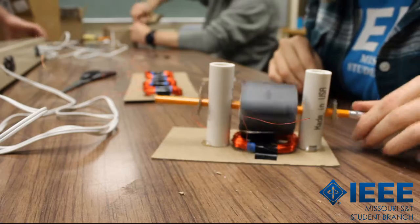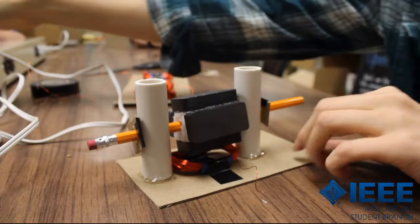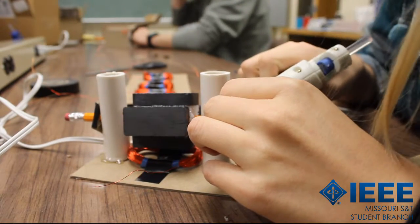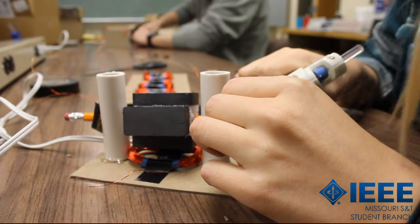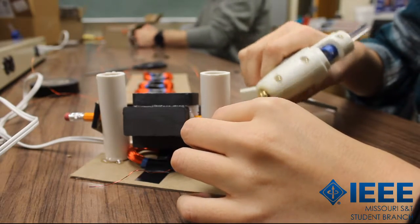Once you have your rotor assembly properly placed, secure it with some glue. Next, we're going to add some cardboard stops so that the pencil can't slide back and forth too far. Cut out small pieces of cardboard and cut a hole in the middle of these pieces for the pencil. Place the cardboard on the pencil and glue in place.